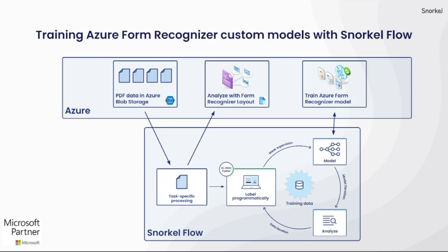We'll then follow the iterative SnorkelFlow development loop, where we can again create training datasets, train models, and analyze their performance in order to improve their quality as we work towards building a production-ready model. To power the workflow, we'll be using SnorkelFlow's PDF-specific development environment to programmatically label our training dataset, and then iteratively train models and analyze their performance to know whether we should be investing in updating our training data or retraining our model.